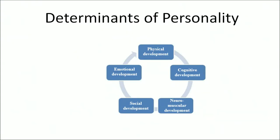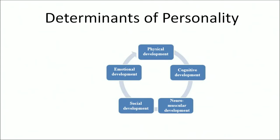Let us understand the various determinants of personality. Physical development: the functional quality of organic systems could be improved through running, jogging, walking, or participating in sports activities such as volleyball, football, basketball, swimming, or any other activity. Social development: sports play a very important role in social development. Players have to participate in competition and perform as per the rules. In this way, an individual may carry improved behavior to the society and behave as per the rules developed by the society.